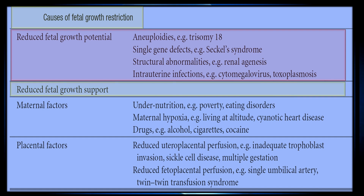Another cause is reduced fetal growth support. Certain maternal factors causing fetal growth restriction include under-nutrition (e.g., poverty or eating disorders), maternal hypoxia (e.g., living at altitude or cyanotic heart disease), and certain drugs like alcohol, cigarettes, and cocaine. Additional causes include reduced uteroplacental perfusion (e.g., inadequate trophoblastic invasion, sickle cell disease, and multiple gestation) and reduced fetoplacental perfusion (e.g., single umbilical artery or twin-to-twin transfusion syndrome).